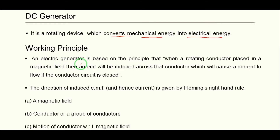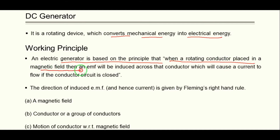As discussed in previous lectures on Faraday's laws of electromagnetic induction, the main working principle of an electrical generator is based on the principle that when a rotating conductor is placed in a magnetic field, an EMF will be induced across that conductor, which will cause a current to flow if the conductor circuit is closed.